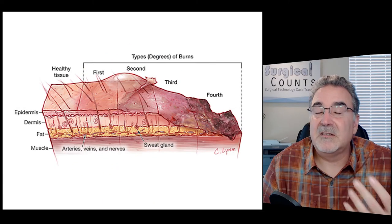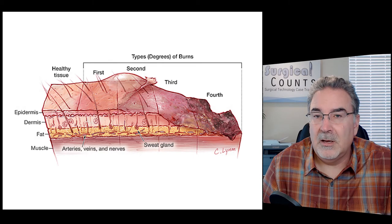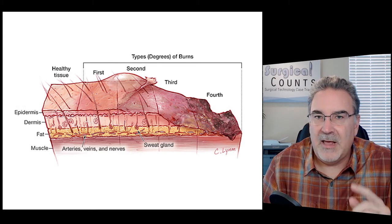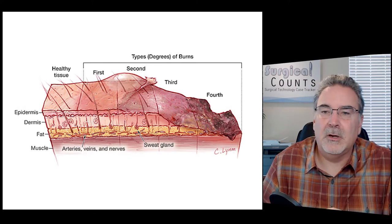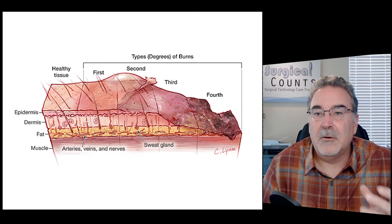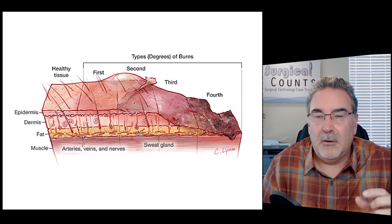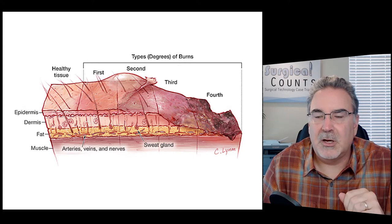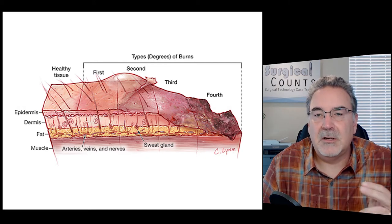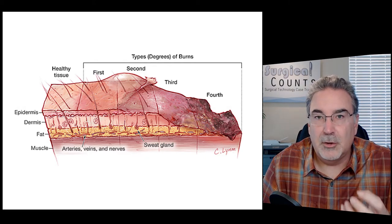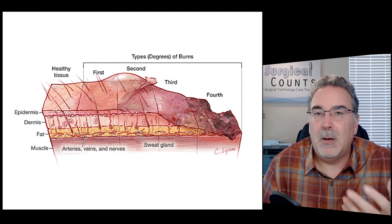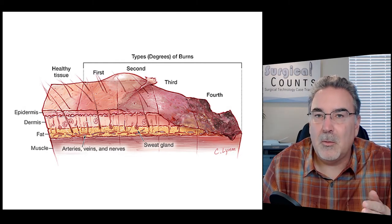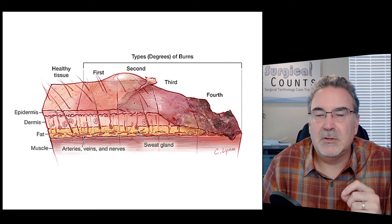When the skin is exposed to heat, it can get burned. Depending on which layers are involved determines which class of burn you're dealing with. A first-degree burn involves the epidermis only — the skin turns a reddish or pinkish color. Second-degree burns start to extend down into the dermis, and here we can have bubbling, blistering, or even peeling away of the epidermis exposing the dermis.